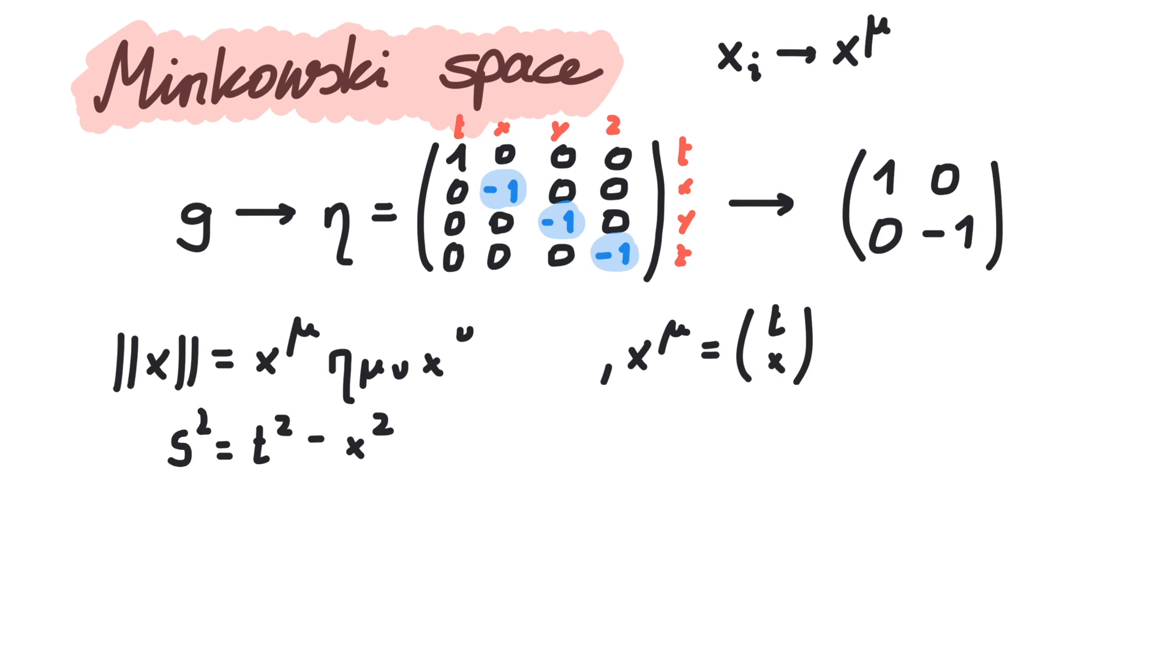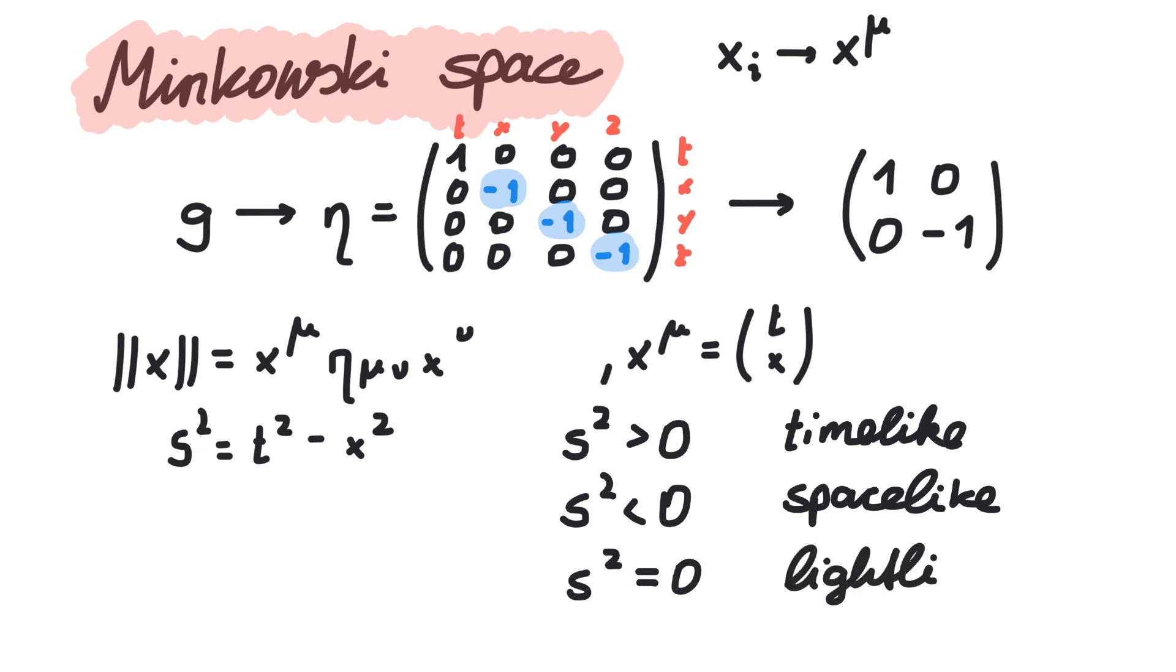Now depending on whether t or x is greater, we can have positive or negative values as well as zero. If for our vector x the time component is greater, we call this vector time-like. If the spatial component is greater, space-like. And if the inner product is zero, we call it light-like, because that means x equals t, which describes the motion of light.